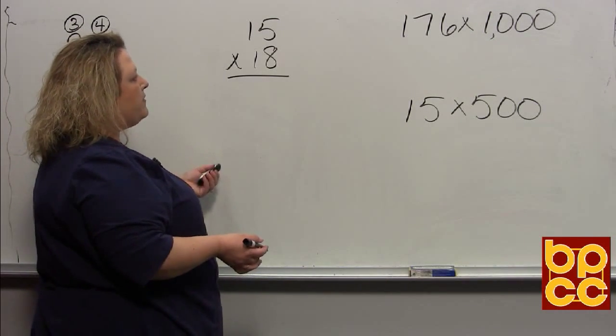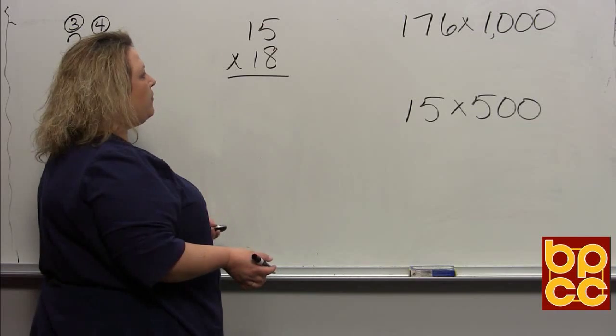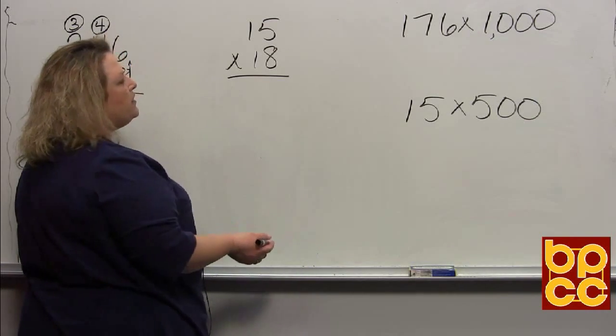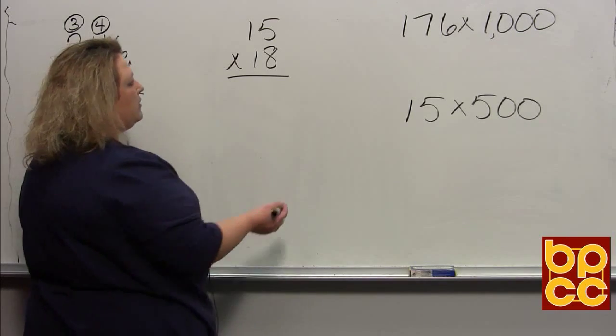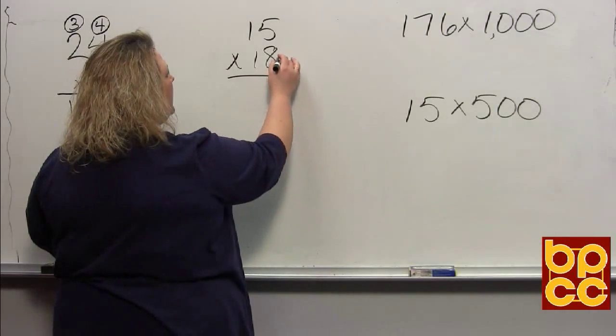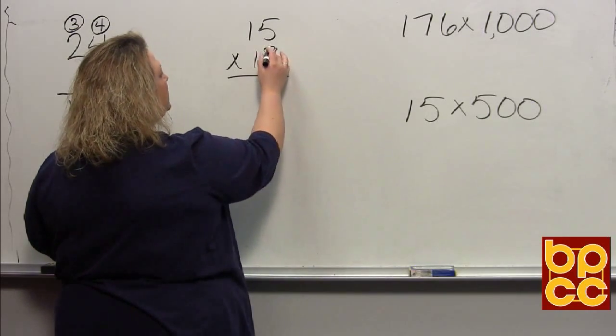Then we get into a little more challenging problem. I have a small one as an example here for you: 15 times 18. So what we want to do in a two-digit number times a two-digit is take the ones place. That is where we are always going to start on the bottom.